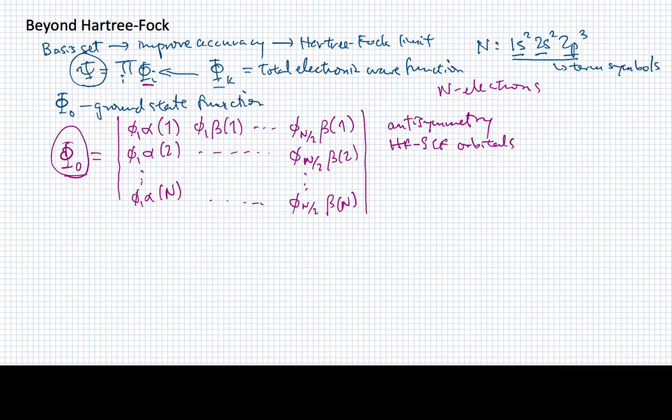Well, this thing could be written in terms of an electron configuration as something like phi one squared, phi two squared, phi three squared, all the way up to phi n over two squared. So we can think of this as being sort of an abstract way of writing the electronic configuration there.